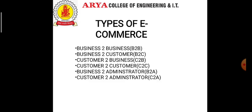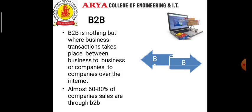The different types of e-commerce are: B2B (business to business), B2C (business to customer), C2B (customer to business). B2B is where business transactions take place between businesses or companies over the internet. Almost 60 to 80% of commerce is done through B2B. In this transaction, companies are doing business with each other. The final consumer is not involved. Online transactions only involve the manufacturers, wholesalers, and retailers.